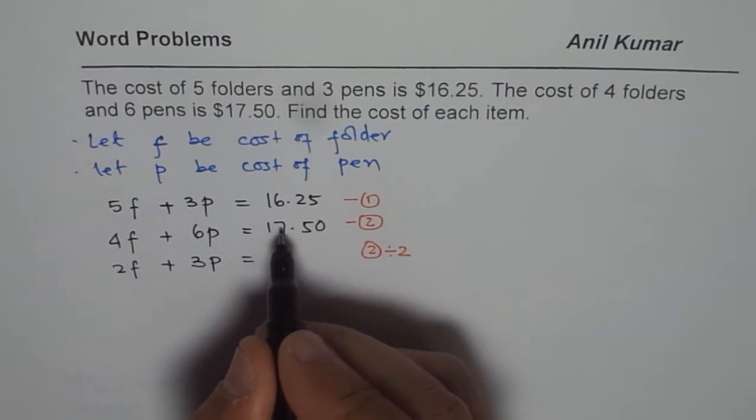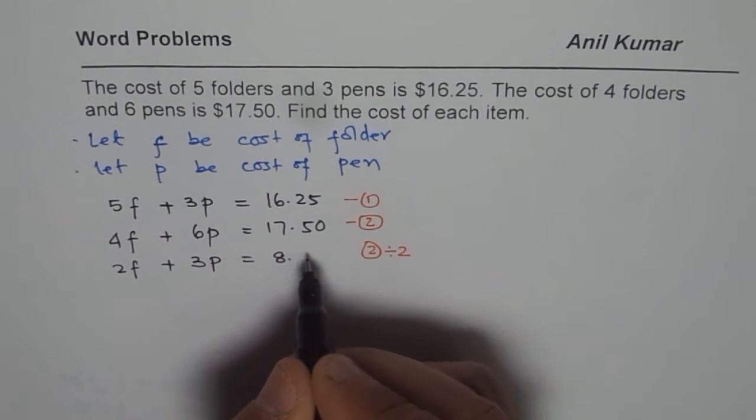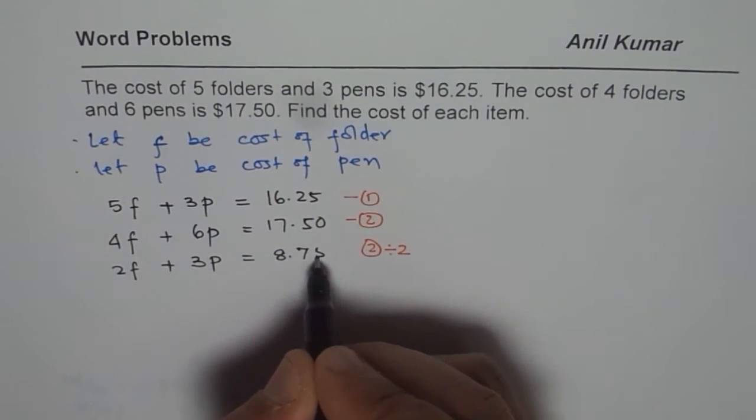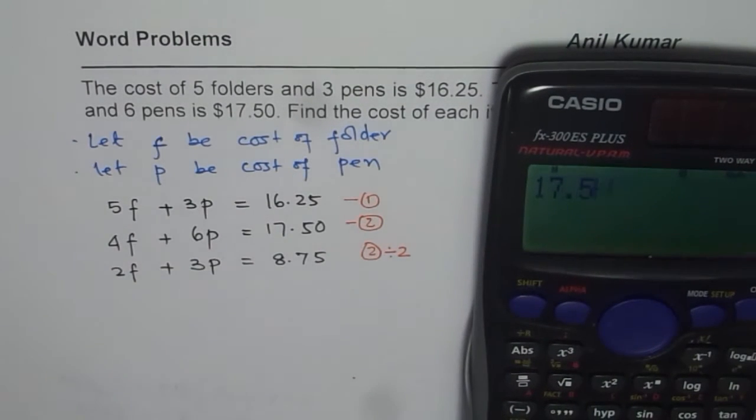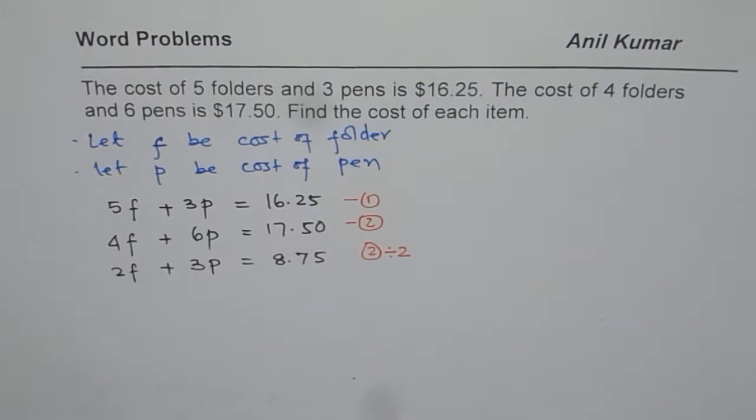So 2 times 8 is 16. 15 means 2 times 7 and then 5. So you should use calculator. Let us use the calculator and 17.5 divided by 2 equals, right decimals, 8.75.